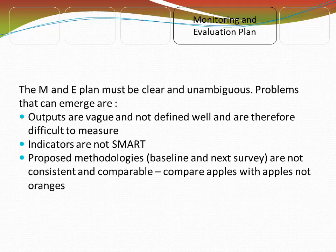An M&E plan must be clear and unambiguous. Problems that can emerge are that outputs are vague and not well defined, and therefore difficult to measure. Your indicators are not SMART. The proposed methodologies — the baseline and surveys — are not consistent and comparable, so you are not comparing apples with apples but apples with oranges. Therefore you can make no comparison, and this invalidates your evaluation process.